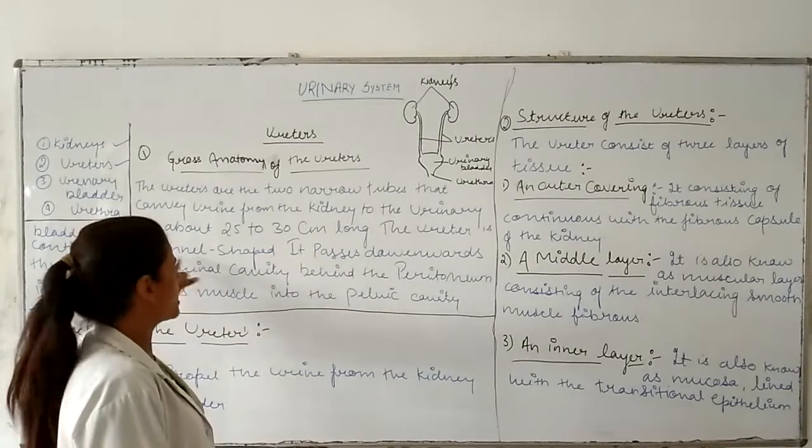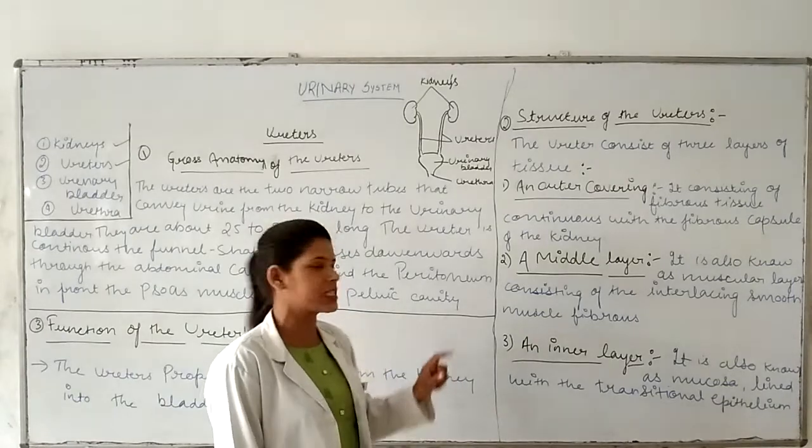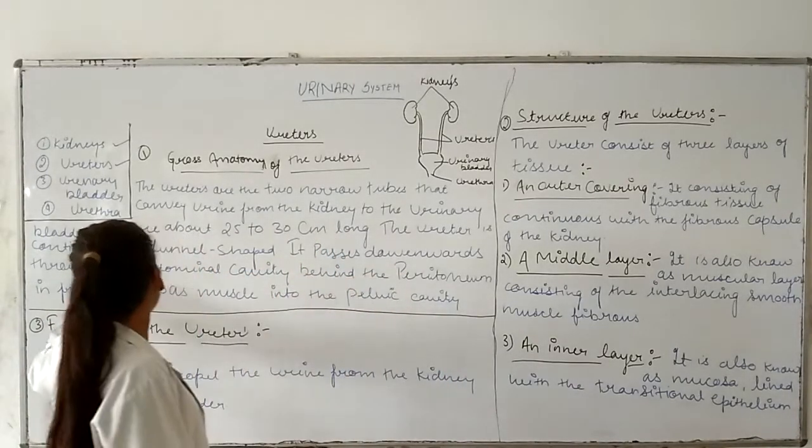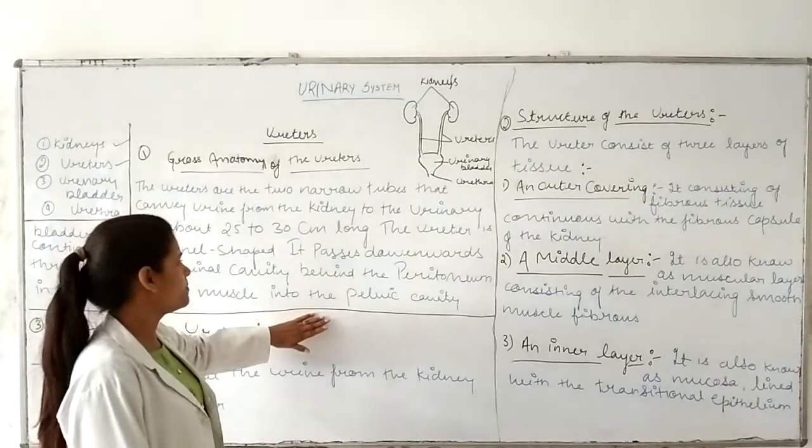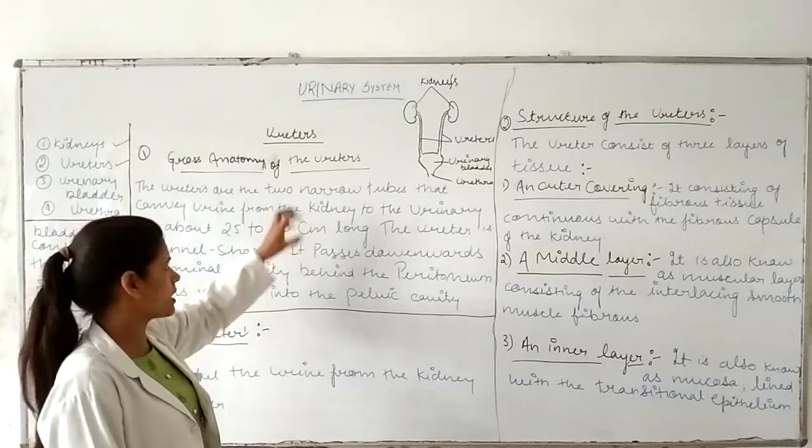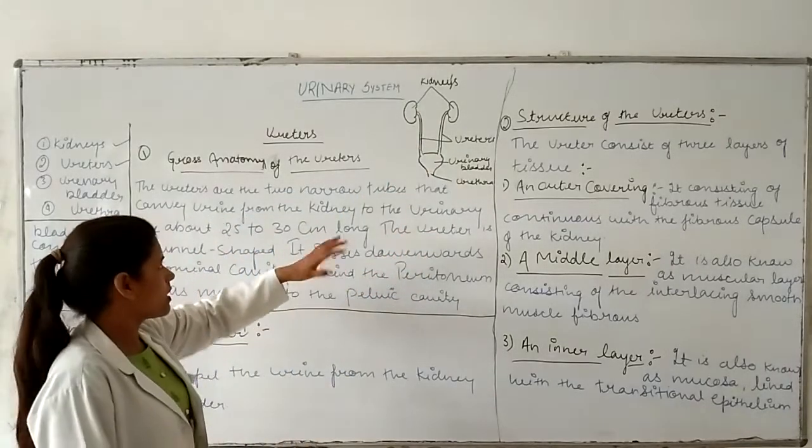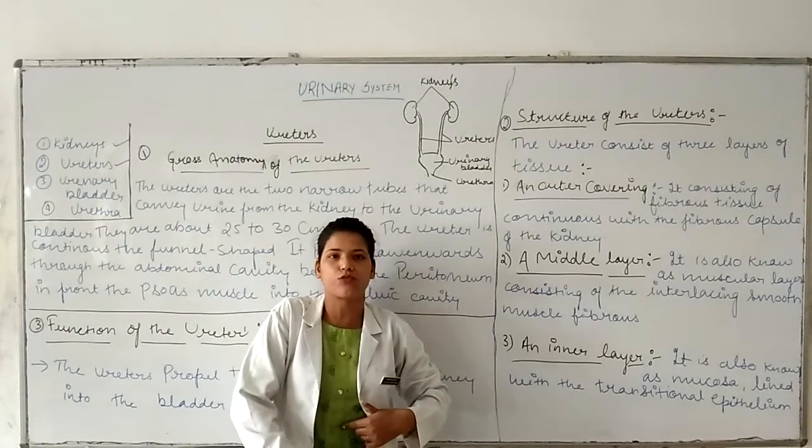The shape is funnel-like at the top. The ureters pass downward through the abdomen cavity and travel downward and forward through the body.